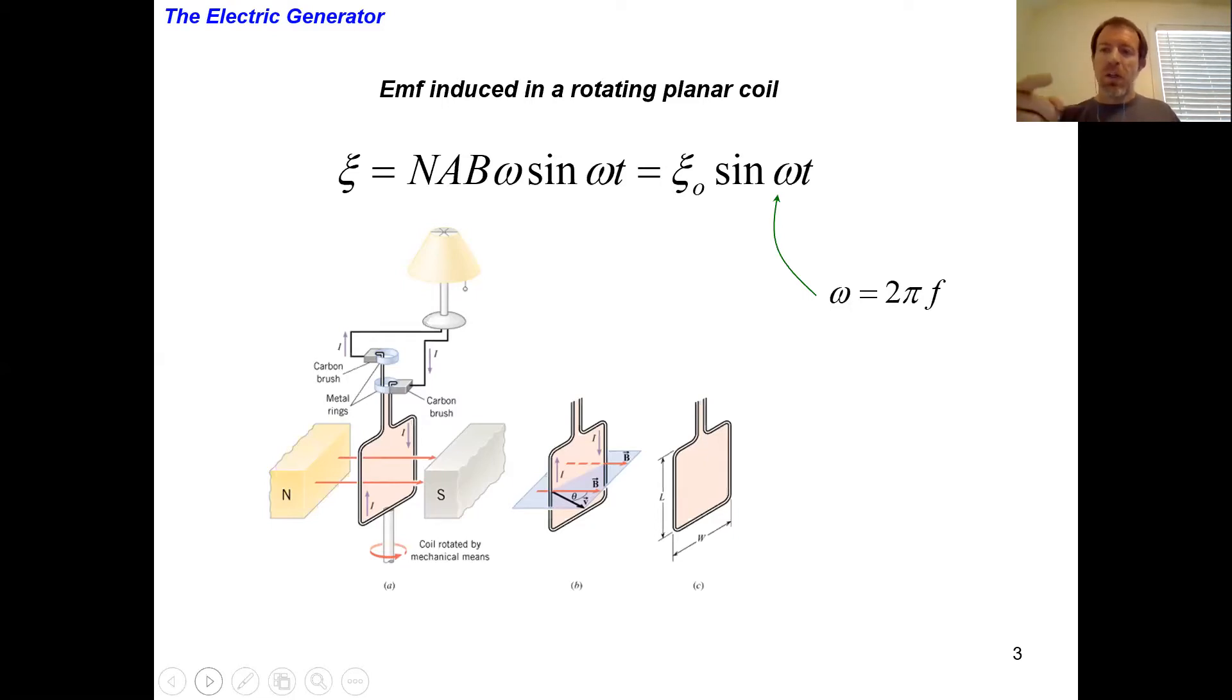The direction of the current is going to change—it's going to be running in one direction through half of the motion and the other direction through the other half of the motion. So this is kind of like a sine wave that ends up getting formed. This is kind of like AC power generation.